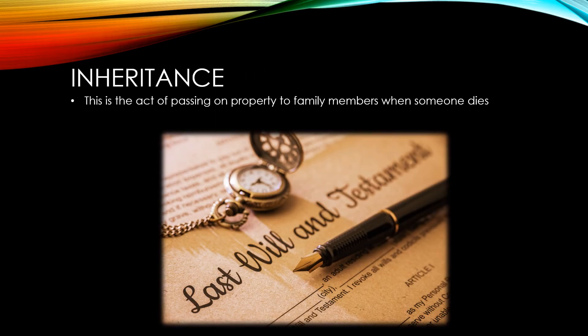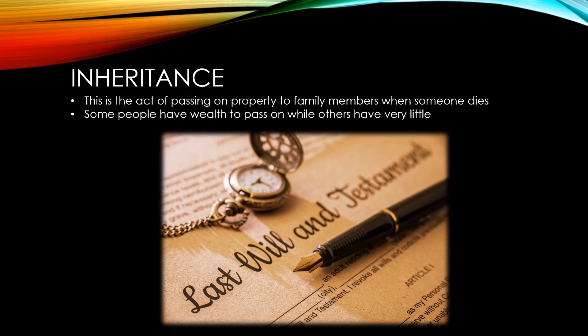The first of these is inheritance. This is where someone passes on their property, normally to other family members, when they die. They do this by writing a will and saying who should get what amongst their property. Some people will have a lot of wealth to pass on, and others will have virtually no wealth to pass on. So inheritance perpetuates the distribution of wealth problems that we already have.